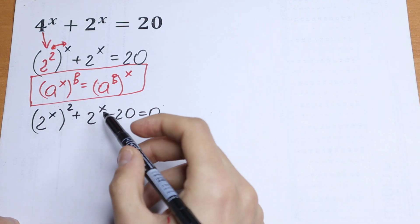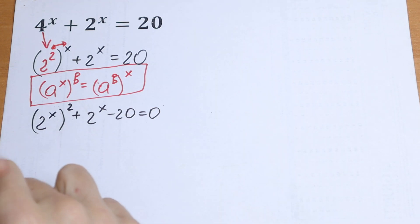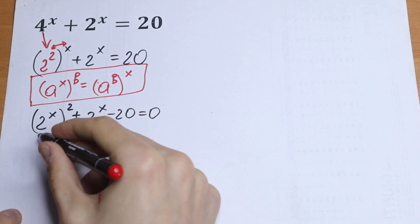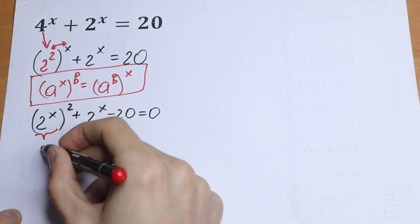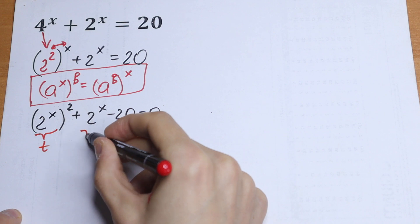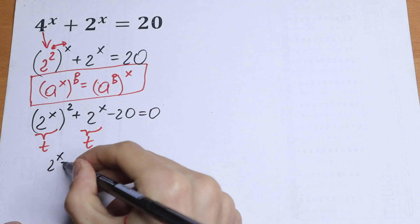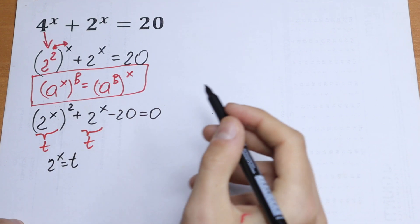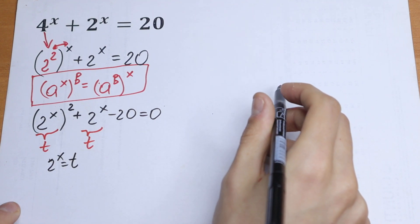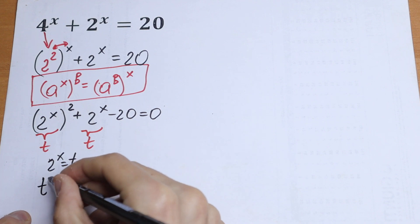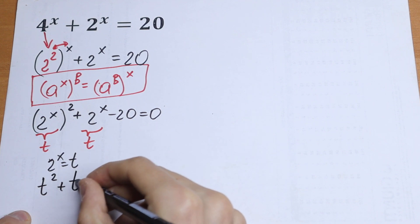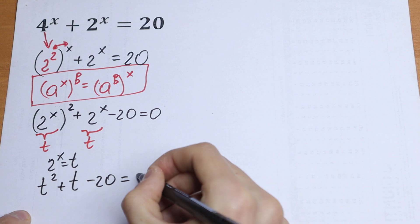2 to the power x, 2 to the power x. Of course, it's a really good case to write a substitution right here. So let this 2 to the power x as t and this 2 to the power x as t as well. So we'll have 2 to the power x equals t, and we'll have an interesting quadratic equation: t squared plus t minus 20 equals zero.